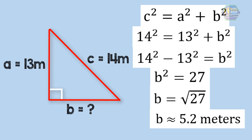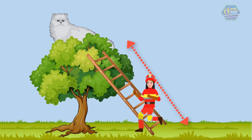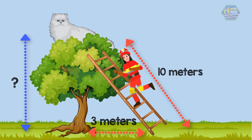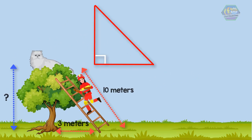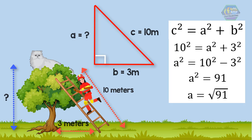Now that you know the Pythagorean theorem, I encourage you to pause this video and try to solve this problem. Jane is a firefighter saving a cat trapped at the top of a tree. She leans a 10-meter ladder against the tree. The base of the ladder is 3 meters from the base of the tree. How high is the cat? We can use the Pythagorean theorem: the hypotenuse is the ladder (10 meters), one side is the distance from the base (3 meters), and we need to find the height. Using c² = a² + b², we can find how high the cat is.